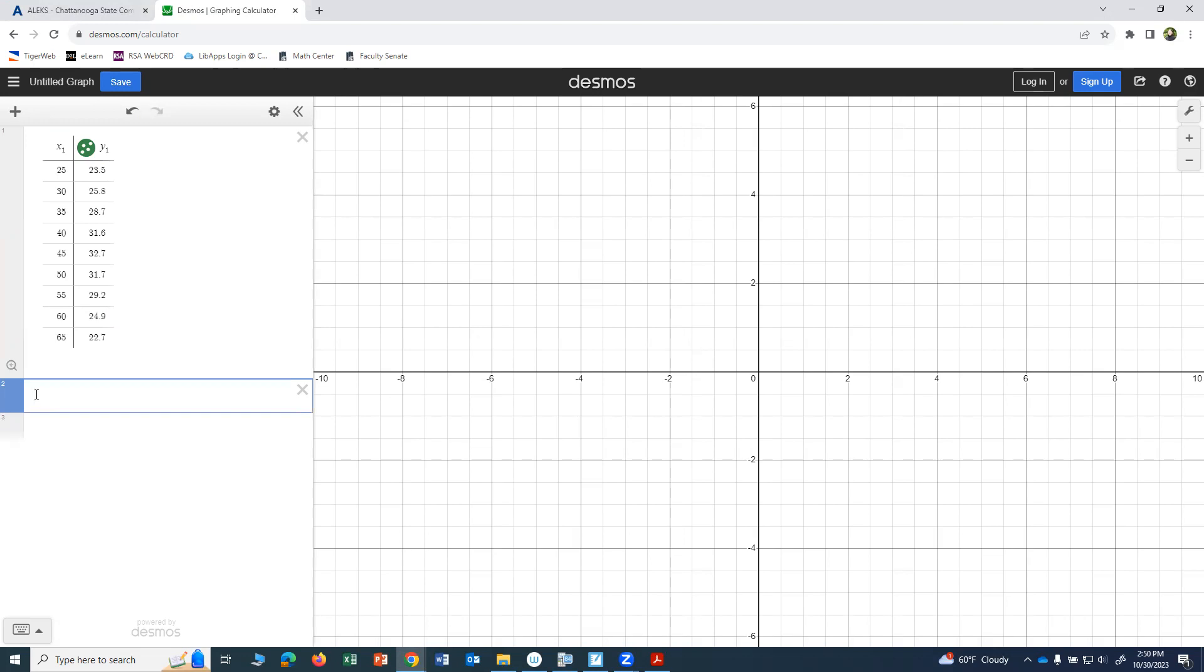And I want to do y1, so I do shift, and then the key to the left is the number one on the keyboard. And then I'll do ax1 squared plus bx1 plus c. And it says I got something wrong. It says x may not be used as a regression parameter, so it's saying that because I forgot the one on that second box. So y1 tilde ax1 squared plus bx1 plus c. And that looks a little better.